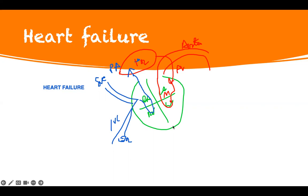The oxygenated blood returns through the left atrium via the pulmonary vein, then gets pumped through the mitral valve into the left ventricle, and later pumped into the systemic circulation through the aorta. Sometimes the heart cannot perform this normal function - it becomes overwhelmed. There's too much fluid on the right side or the left side. It doesn't flow the way it's supposed to, and then it becomes heart failure. So it can be right-sided or left-sided: left heart failure and right heart failure.